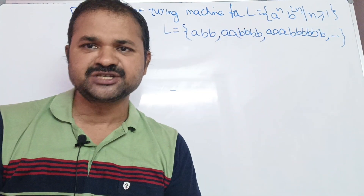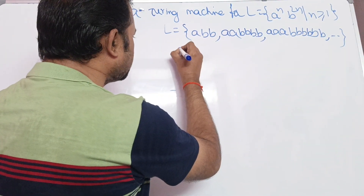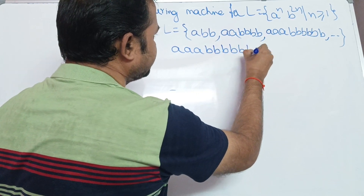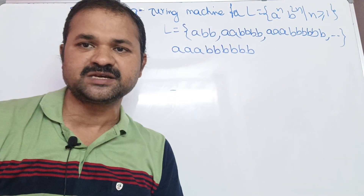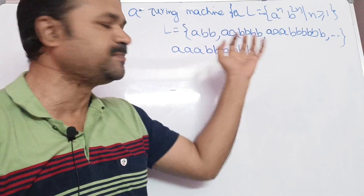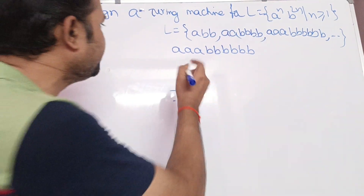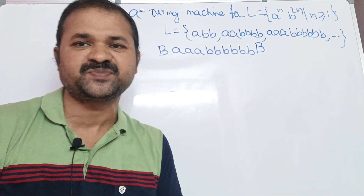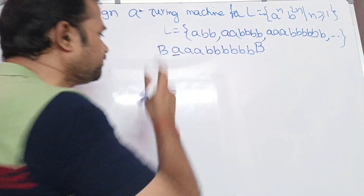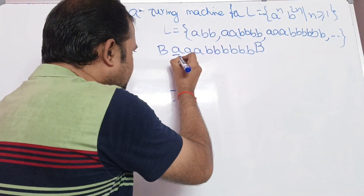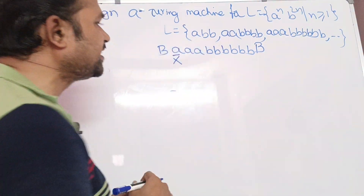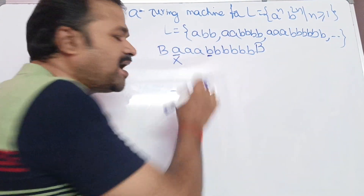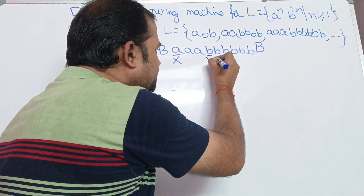Let us see the logic, assuming N=3. The string is 3 A's followed by 6 B's. The logic is: before and after the string we can have any number of blank spaces. First we start at A, replace A by X, then move right until we get B. Since B's are double the A's, for every A we have 2 B's. So we replace those 2 B's by 2 Y's.